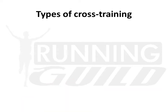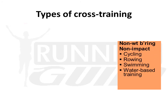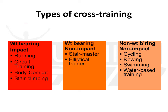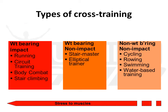What are the types of cross training and how do we differentiate them? On one end of the scale we have non-weight-bearing, non-impactful cross training — activities where you don't carry your own weight and there is no force impact to your muscles, such as cycling, swimming, or aqua jogging. On the other extreme we have full weight-bearing, full impactful activities: running, stair climbing, circuit training, etc. In between, you have weight-bearing but non-impactful options like the elliptical trainer or stair masters. The stress to the muscles increases from non-weight-bearing through to full weight-bearing, full impact exercises.